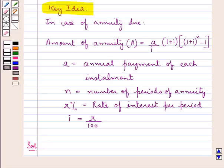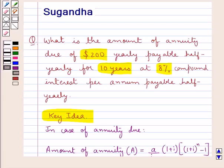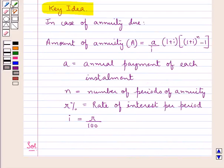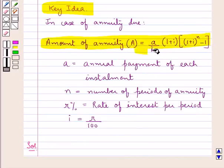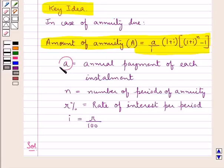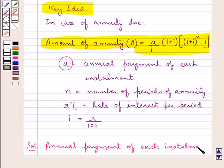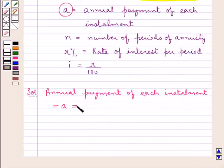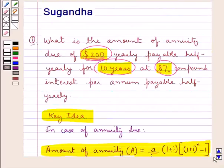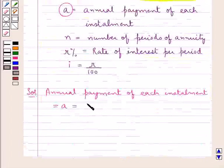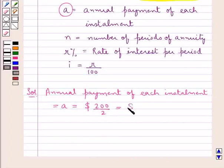Let's move on to the solution. We have to find the amount of annuity due of $200 yearly payable half yearly for 10 years at 8% per annum payable half yearly. First, small 'a', the payment per installment, is $200 divided by 2, since the payment is done half yearly, so a = $100 half yearly.